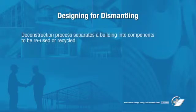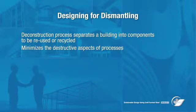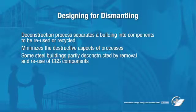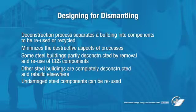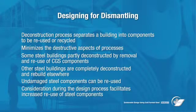The deconstruction process separates a building into components so they can be more readily reused or recycled, minimizing the destructive aspects of demolition by preserving components and materials. Some steel buildings are already partially deconstructed when structural steel components, such as wide flange beams, are removed undamaged and used as-is in a new project. Other steel buildings are often completely deconstructed and rebuilt elsewhere. If extracted undamaged, steel components such as cladding and staircases may be reused. Ease of deconstruction is affected by the systems and technologies used to construct the building and the availability of relevant documentation. Careful consideration during the design process will facilitate increased reuse of structural steel components at the end of the building's useful life.